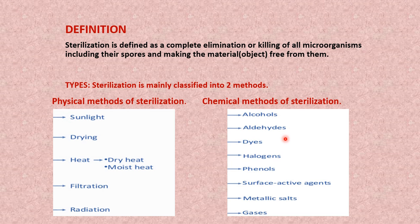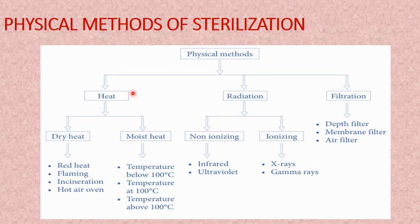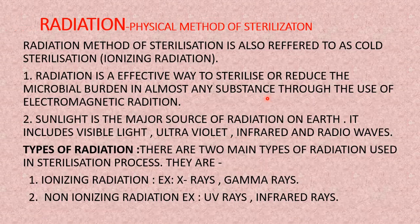Examples of radiation types are ultraviolet rays, gamma rays, and x-rays. Looking at the overall physical methods — heat, radiation, and filtration — heat includes dry heat and moist heat, filtration includes different filter types such as HEPA filters. For radiation, we have two types: non-ionizing, which includes infrared rays and ultraviolet rays, and ionizing, which includes x-rays and gamma rays.